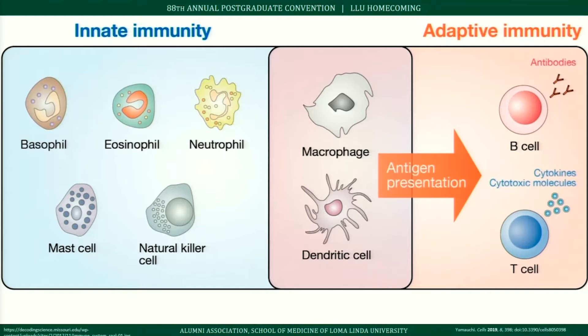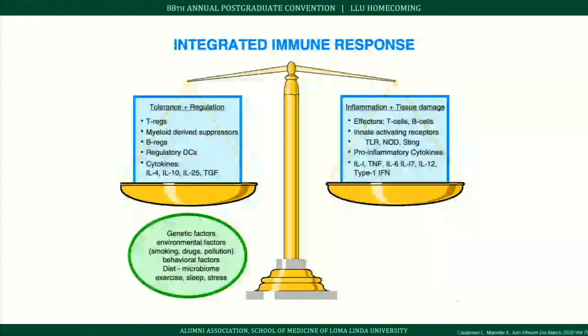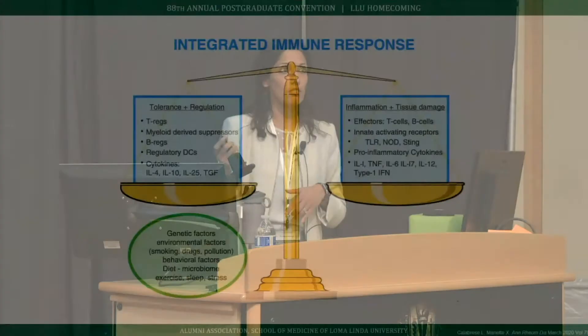Relative to autoimmunity, the integrated immune response is a balance. On the left is tolerance and regulation — T regulatory cells and anti-inflammatory cytokines. On the right is inflammation and tissue damage — effector B and T cells and pro-inflammatory cytokines. A healthy integrated immune response balances the ability to attack with the ability to suppress inflammation.